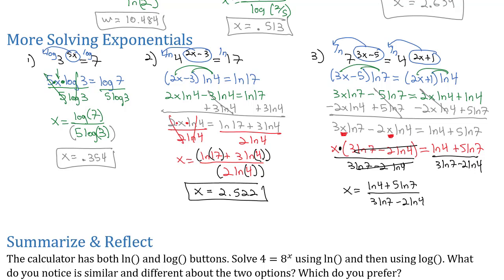Now we're ready to put that into our calculator. Be very careful because every natural log will open a parentheses — make sure you close it right after the number. Also, we need an extra set of parentheses around the numerator and denominator because there's more than one thing going on in there, and we need our calculators to know that whole thing is the numerator and that whole thing is the denominator. If I take care to type that in carefully, we end up with x equal to 3.627. And that's how we can solve an exponential equation when we can't get the same base on both sides.